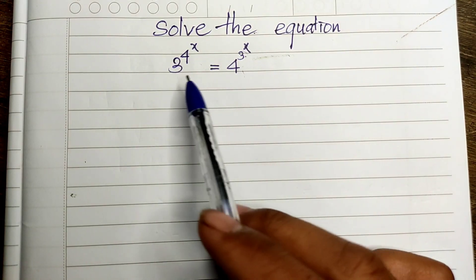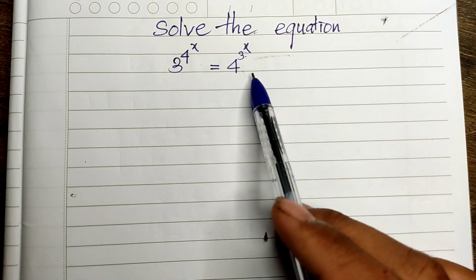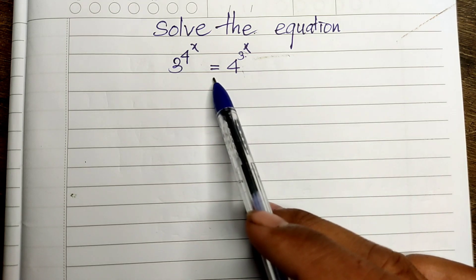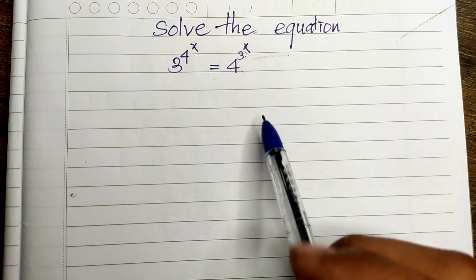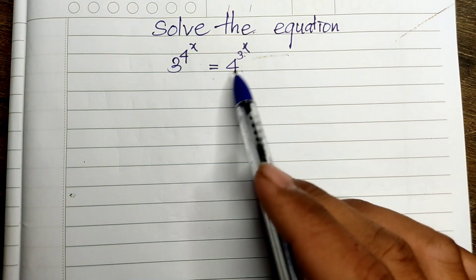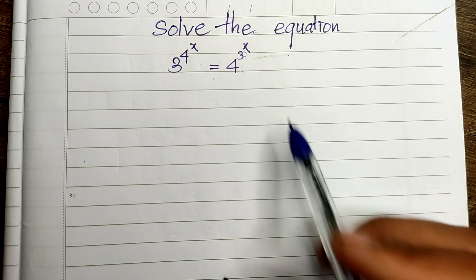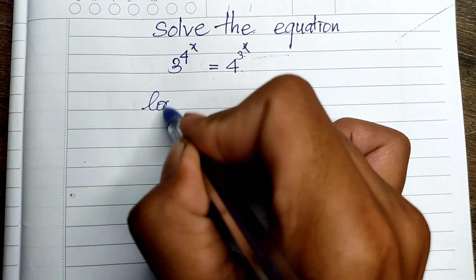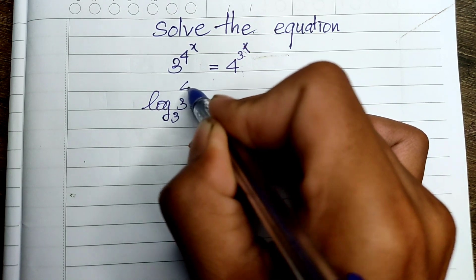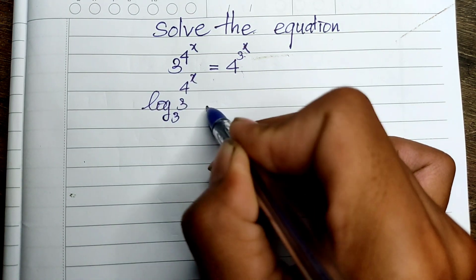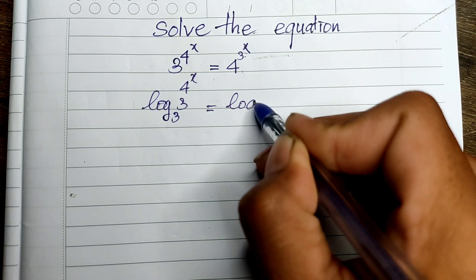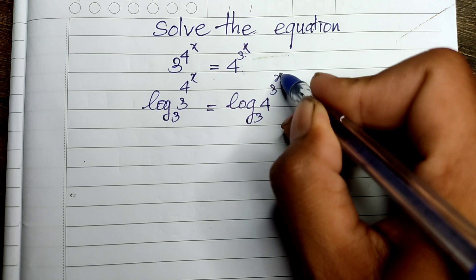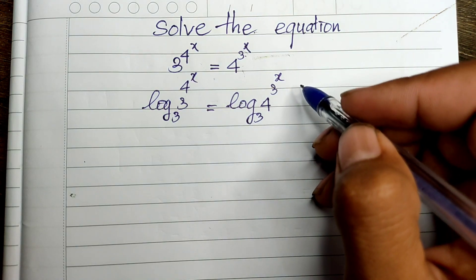To solve this equation, we use this trick: we must put log to both sides of the equation. I apply log base 3 to both sides, so we get log base 3 of 3 to the power 4 to the power 8, equal to log base 3 of 4 to the power 3 to the power 8.